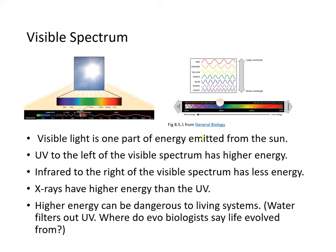Visible light is one part of energy emitted from the sun. UV is to the left of the visible spectrum and has higher energy because it has shorter wavelengths. Infrared is to the right of the visible spectrum and has less energy. X-rays have higher energy than UV. Higher energy can be dangerous to living systems. Water filters out UV — and where do people say life evolved from? Inside the water — and that's one reason people think that.